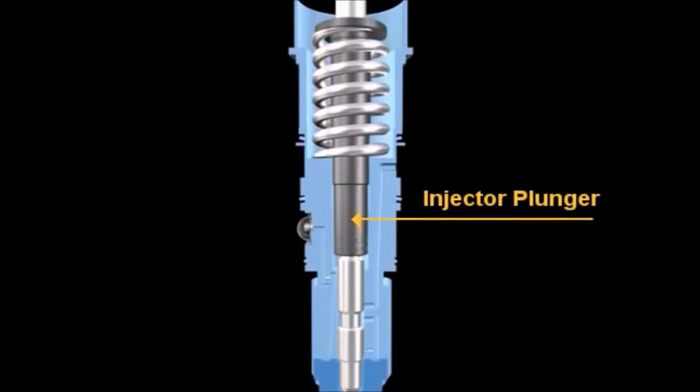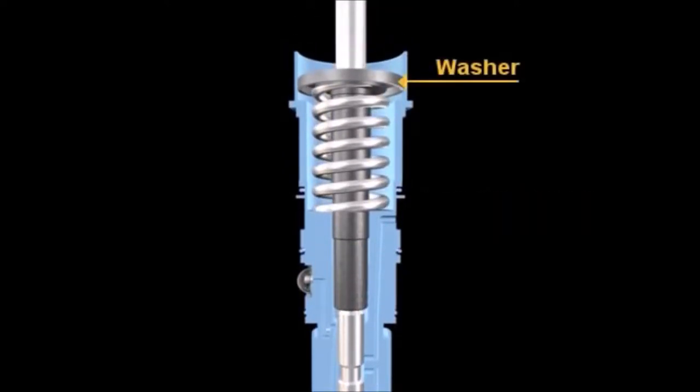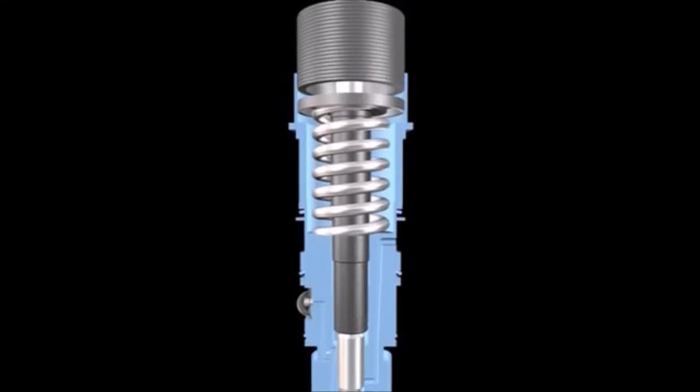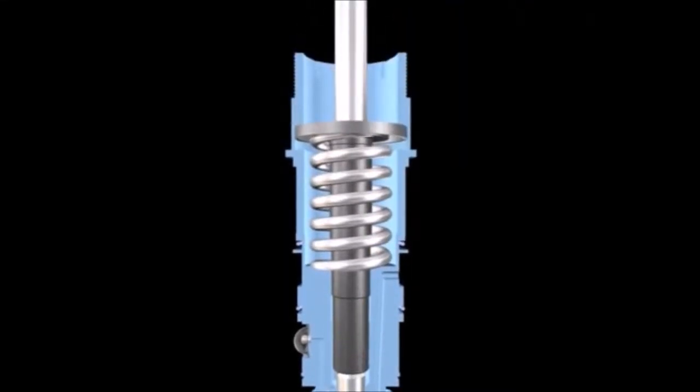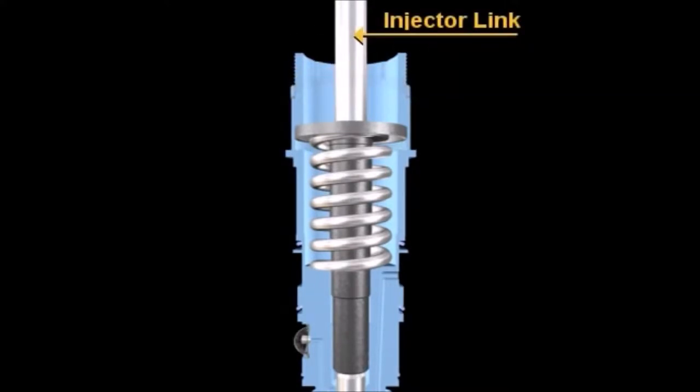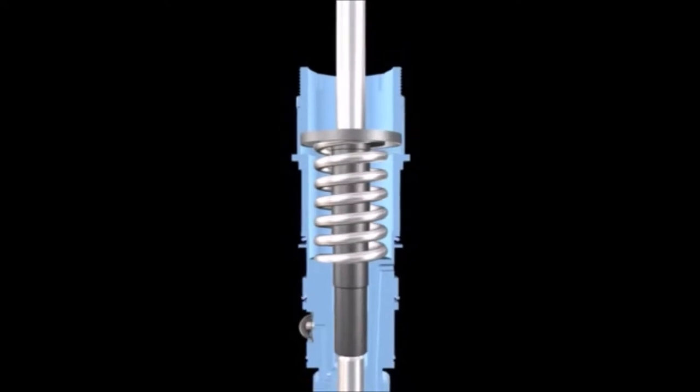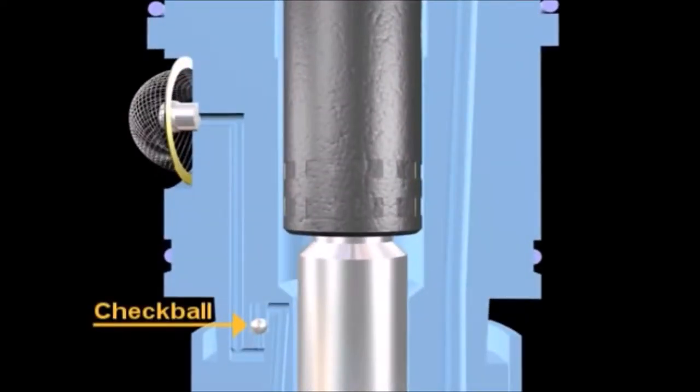Additional components include the injector plunger, washer, top stop adjusting screw, top stop lock nut, injector link, and check ball.